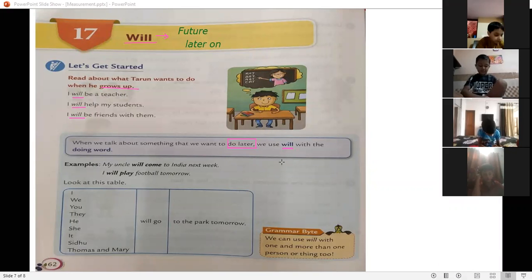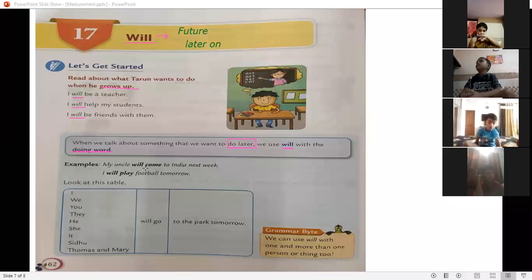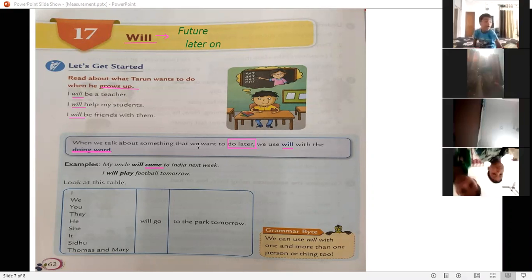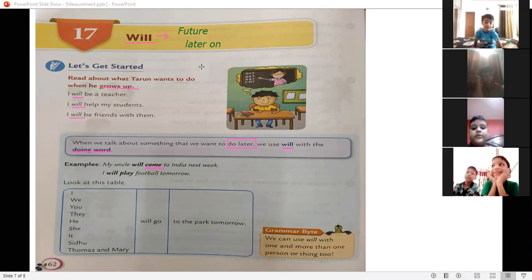Aur hum will kiske saath use karenge? With doing word. Doing word means kuch bhi action word, kuch bhi kaam karna. Like, My uncle will come to India next week. Mere uncle next week India aeenge. To see, come. Come kya ho gya? Doing word. Right? Aeenge, come. So future mein ho raha hiye kaam, later on ho ga. So I will add will.